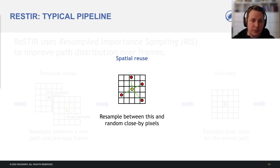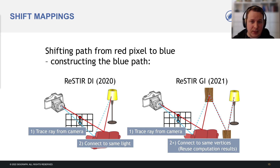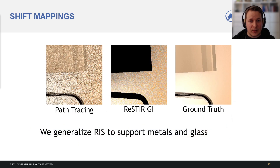So how do we move paths between pixels? Moving a path to another pixel is called shift mapping. A shift mapping takes a base path and outputs a similar offset path in another pixel. ReSTIR DI and GI use the reconnection shift — the offset path is connected to the next vertex of the base path.